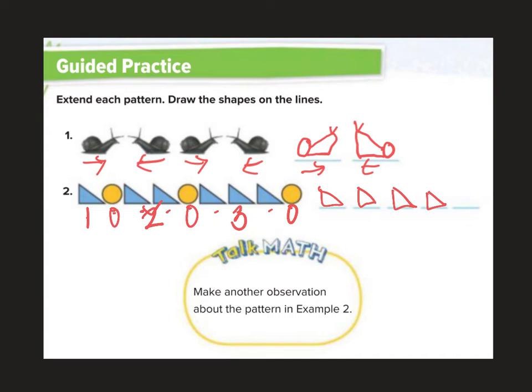Make another observation about the pattern in example two. Well, it's growing. What would be another observation? I suppose if you wanted to, even number of, or odd number of triangles, circle. Even circle, odd circle, even circle. Let's make that observation.